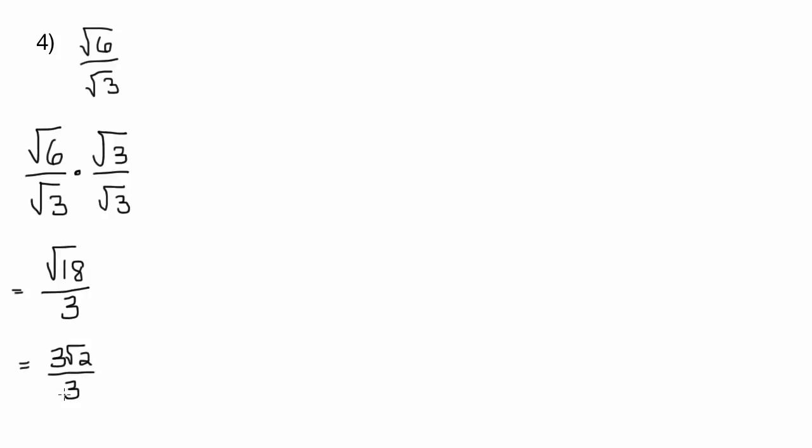So the square root of 18 is going to simplify to 3 root 2. And then it's over 3. And then we need to simplify it even more. Because we've got a 3 in the numerator, 3 in the denominator, those divide out to be 1, and our answer is just simply root 2. Perfect.